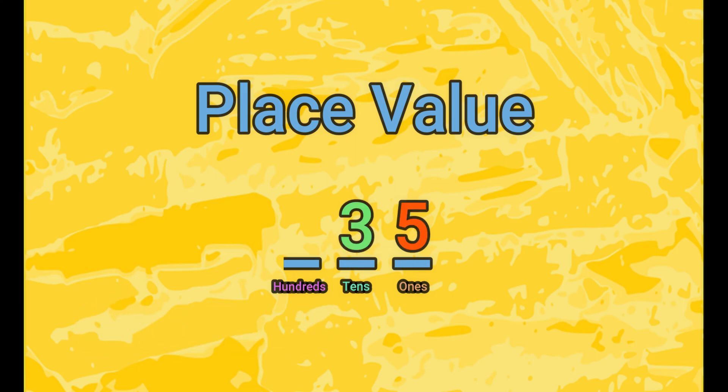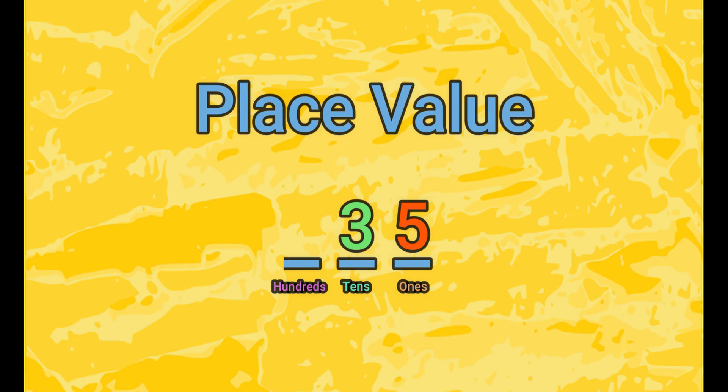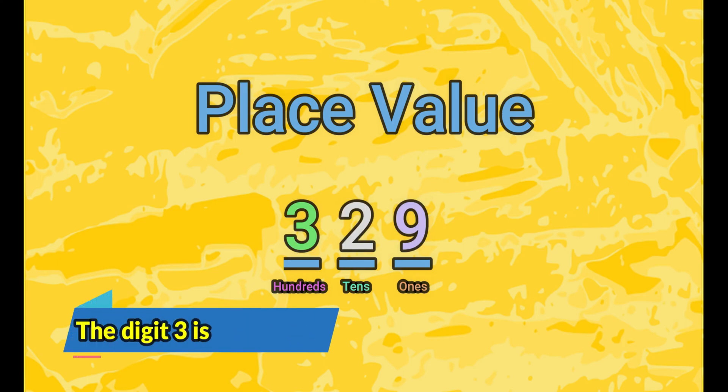In the number 35, the 3 now carries a value of 30 because it's a 3 in the tens place. In the number 329, the 3 is worth 300 because it's a 3 found in the hundreds place.